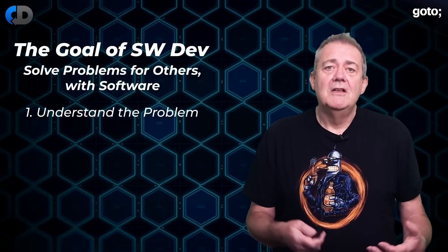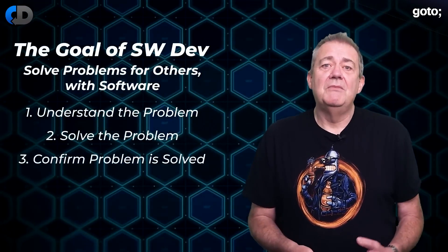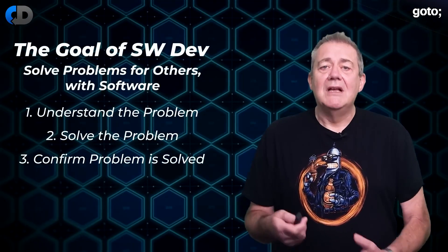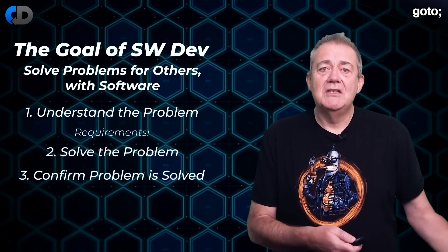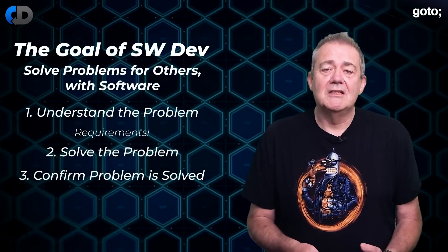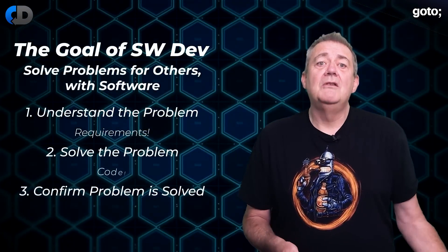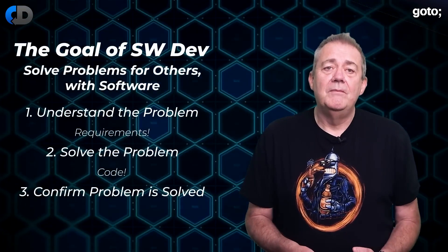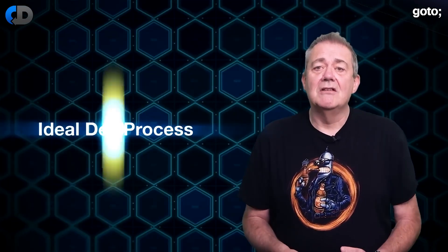So if we want to do that there are three things that we have to do. We need to understand the problem that we're trying to solve. We need to solve the problem and we need to confirm that the problem is actually solved. So as an absolute minimum we need some form of requirement that describes the problem, and if we're using software to solve the problem we need some code that's going to solve it, and we need some tests that confirm that the problem is actually solved when we're done.